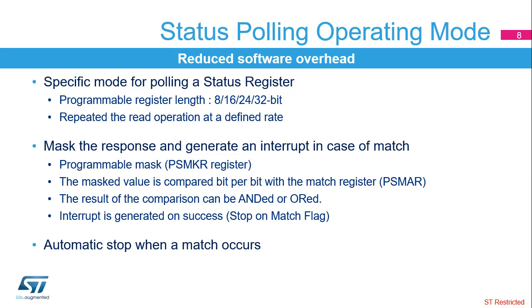The OctoSPI interface can be configured to periodically read a register in the external flash. The returned data can be masked to select the bits to be evaluated. The selected bits are compared with their required values stored in the match register. The result of the comparison can be treated in two ways: in ANDED mode, if all the selected bits are matching, an interrupt is generated; in ORD mode, if one of the selected bits is matching, an interrupt is generated. When a match occurs, the OctoSPI interface can stop automatically.